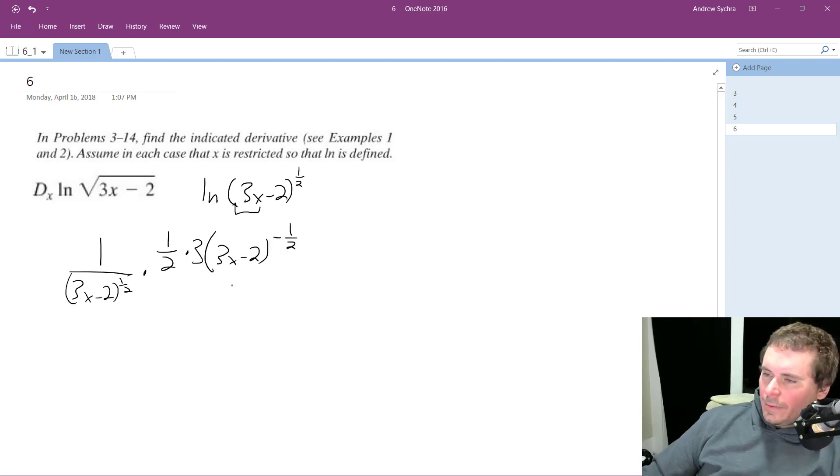So rewriting this, this is the same thing as 1 over 2, and actually we get 3 up here. So we got 3x minus 2 raised to the 1 half.